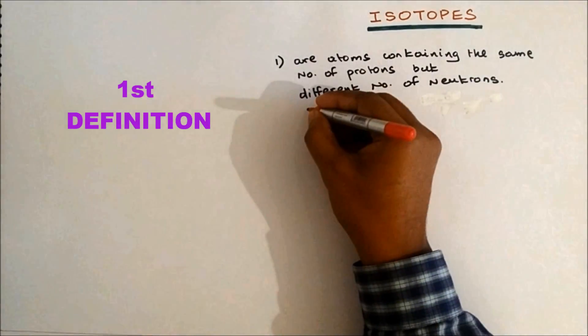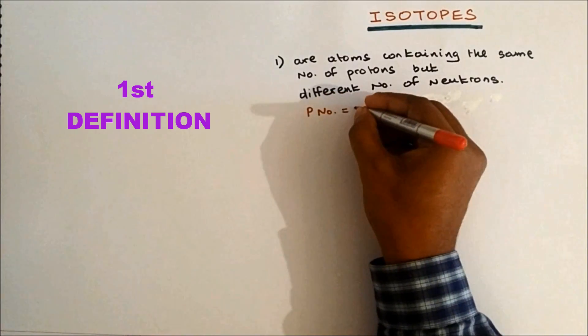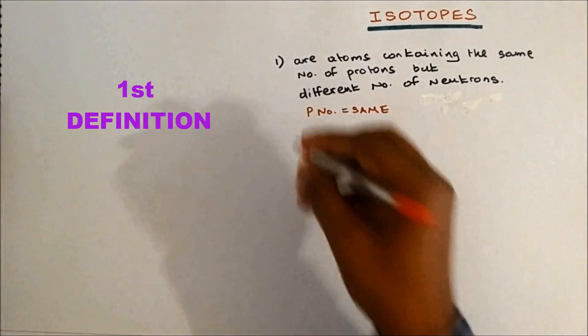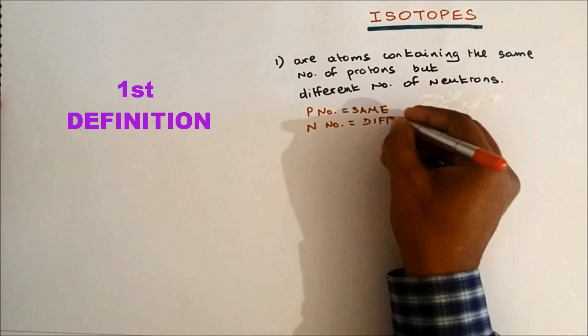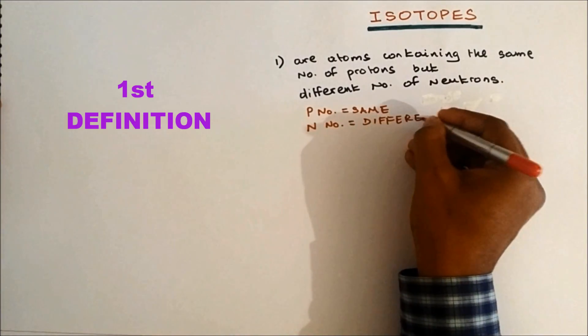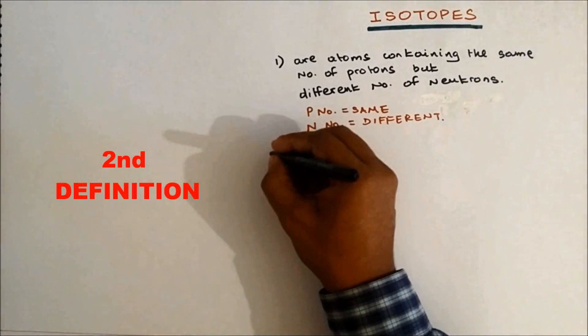Simply, proton number is the same but neutron number is different.